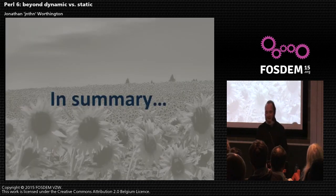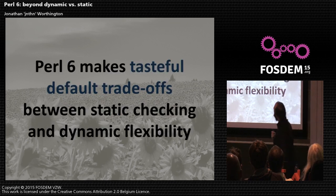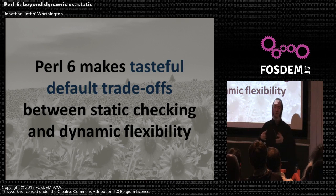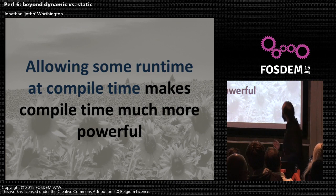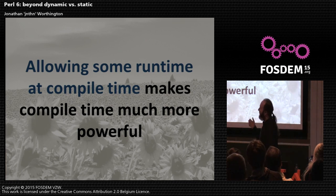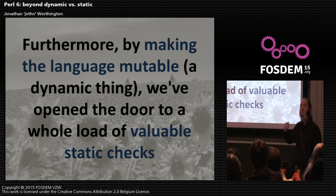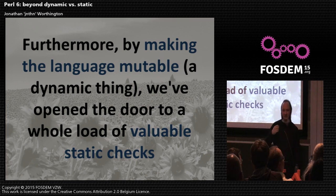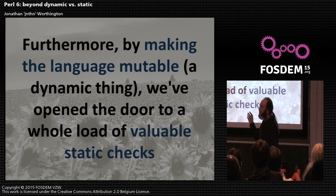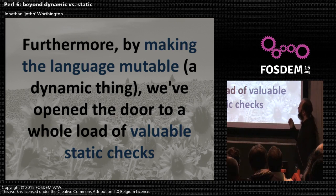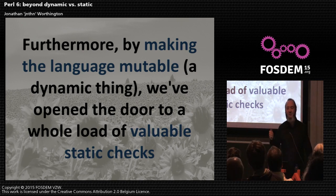So just to draw this together. In Perl 6 we've made quite tasteful default trade-offs between static and dynamic, deciding what makes sense to determine at compile time and what really wants to be dynamic. Interestingly, by allowing a bit of runtime inside compilation — saying even the language itself is mutable — we make it much more powerful. And somewhat ironically, that very great dynamism opens the door to a whole load of interesting opportunities to do not just boring static checking, but much more interesting program property verification that you really would not want making it out into your production environment.